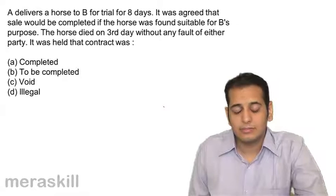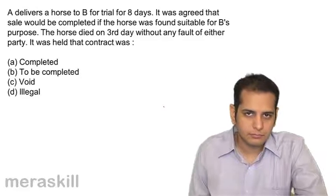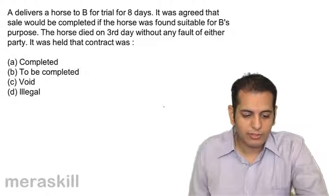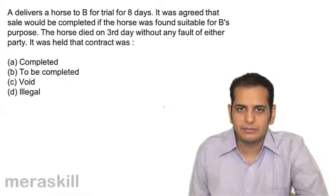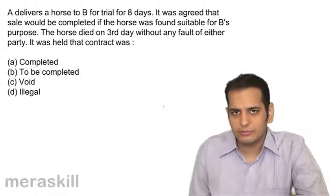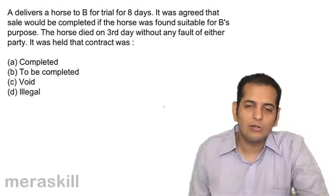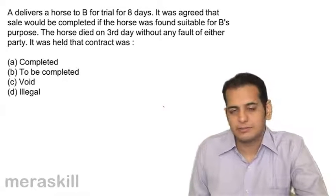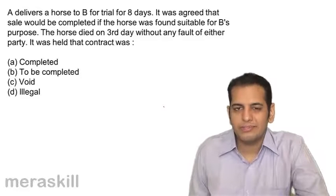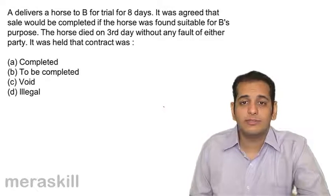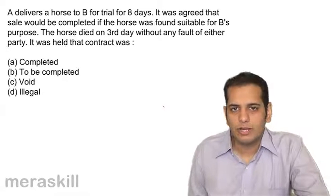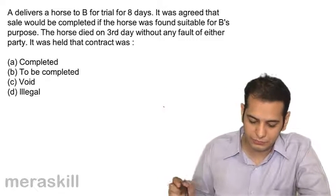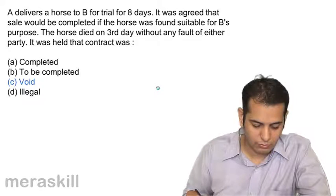Why does it become void? It becomes void because the subject matter has got destroyed before the contract was supposed to be finalized. The horse has died, so how can you complete the contract? The contract was about selling the horse after 8 days, and before those 8 days elapsed the horse died. There can be no contract because the subject matter is no longer in existence — impossibility of performance. Void is the answer.